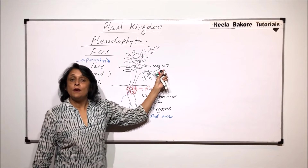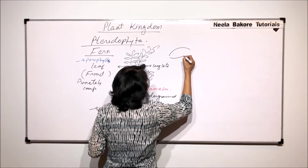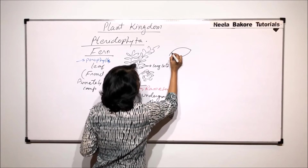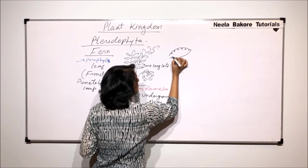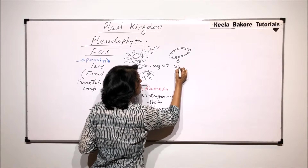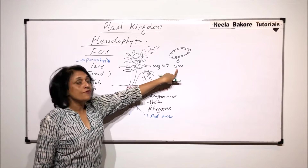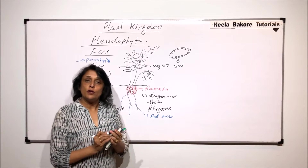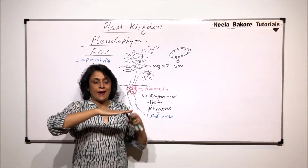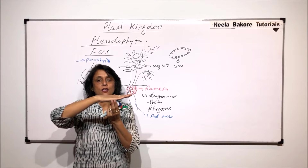If we draw one leaflet seen from the lower or ventral side, we find brown-colored circular patches seen all along the margin. These structures are called the sorae — singular is sorus. These are the structures where we have many sporangia. These circular patches are on the margin of the lower side of the leaf.